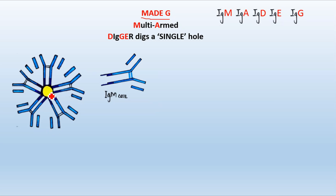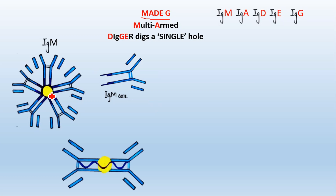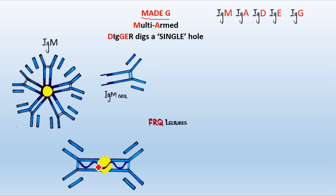Five such units combine with each other with the help of this J chain protein and they form the IgM pentamer. Next we have IgA. Clearly you can see that two units combine with each other to form a dimer. Earlier we talked about the pentamer, now we are looking at a dimer, and again we have the J protein — the joining chain protein — that is helping them join with each other. We also have a unique wave-like structure here, which I will talk about in a moment.